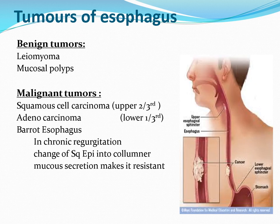Tumors of the esophagus can be benign or malignant. Benign tumors include leiomyoma and mucosal polyps. Malignant tumors: squamous cell carcinoma is mostly seen in the upper two-thirds and adenocarcinoma in the lower one-third.